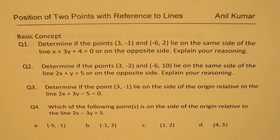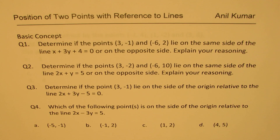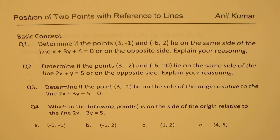Here are four questions which I'm going to discuss, and later we'll have four more multiple choice questions seen in previous test papers. Question number one: determine if the points (3, -1) and (-6, 2) lie on the same side of the line x + 3y + 4 = 0, or on opposite sides — explain your reasoning. Question two is a similar practice question for you based on learning from question one.